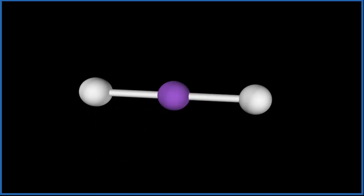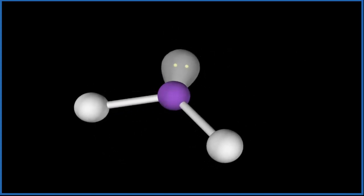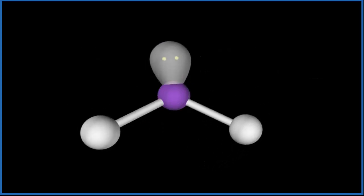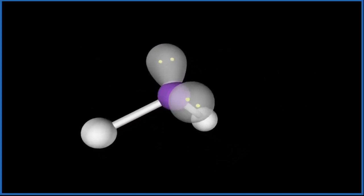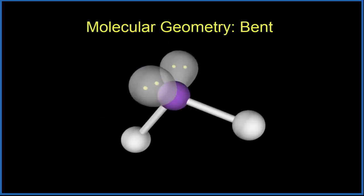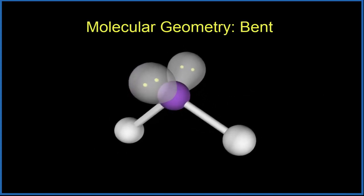But we also have those two lone pairs. We add one lone pair, everything pushes away from itself. And then we add one more, and we end up with this. And this is a bent molecular geometry.